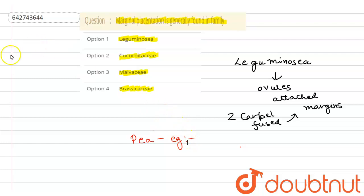So now let's proceed to all the options given. Marginal placentation is generally found in the family Leguminose - yes, it is the correct option. Option number two, Cucurbitese - no, it is incorrect. Option number three, Malvise - no, this is also incorrect. Option number four, Brasekse - it is also incorrect.